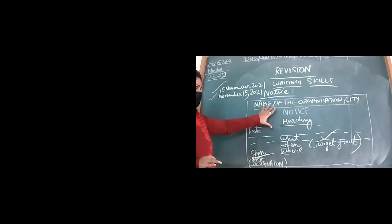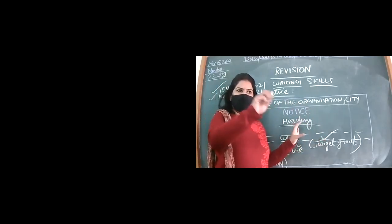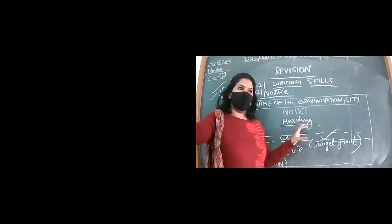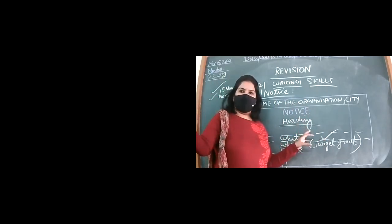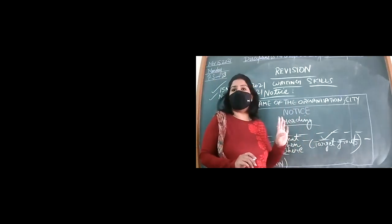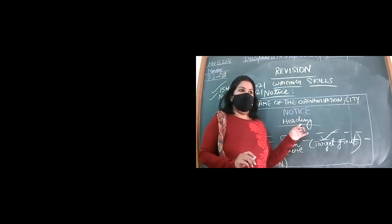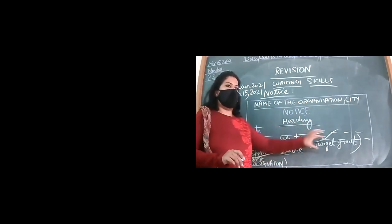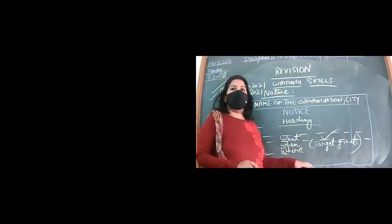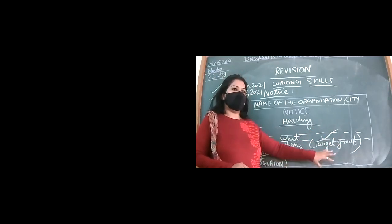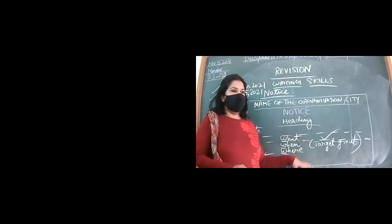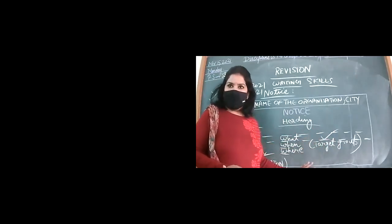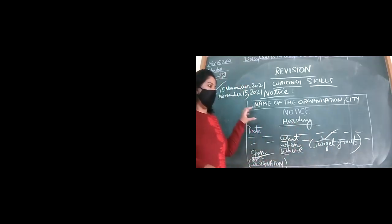What they do for writing skills is write one notice with blanks. For example: 'This is to inform A dash that B dash is going to be organized on 15th November 2021.' Then C dash, D dash—so it means one notice can give you four marks also. Options will be there based on the content given.